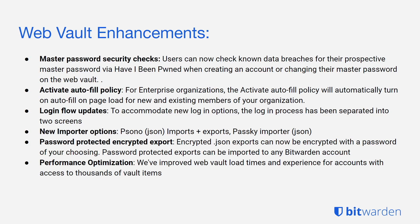Shifting focus to the web vault — some new enhancements include master password security checks. Users can now check for known data breaches for their prospective master password via HaveIBeenPwned when creating their account or changing their master password. You can activate autofill on page load for users leveraging the browser extension with the new enterprise policy called 'Activate Autofill.' We've also addressed new login flow updates: to accommodate the new login options, the process has been split into two screens. You'll enter your Bitwarden username, followed by a second screen prompting you for login with SSO, login with device, or just using your master password.